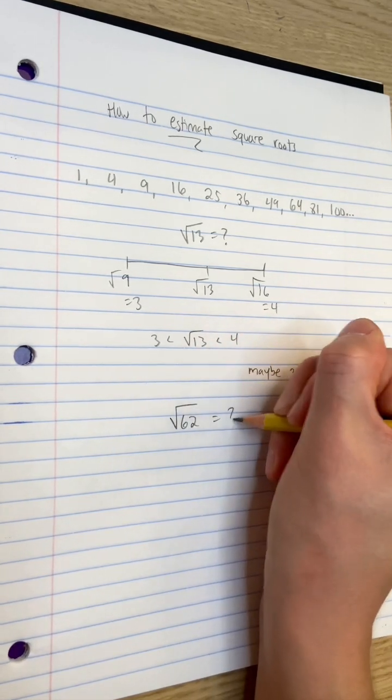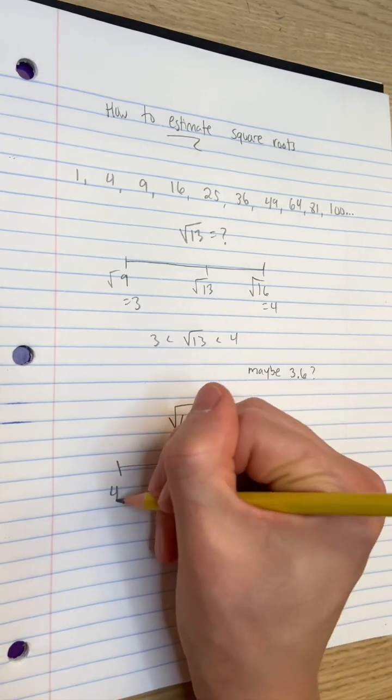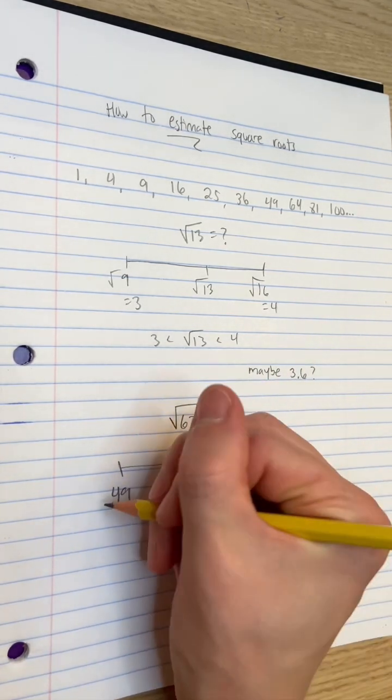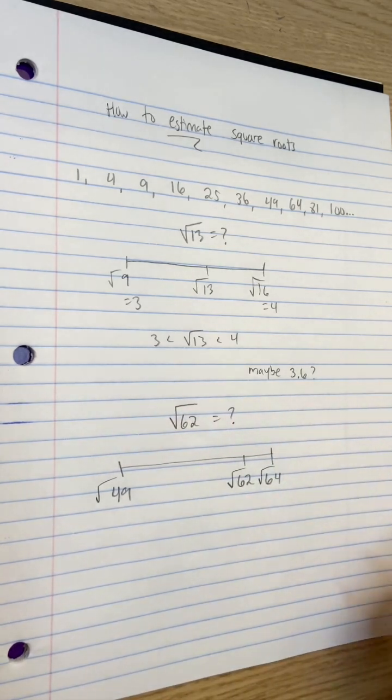Let's do another example, the square root of 62. 62 is in between the perfect squares 49 and 64, which we know the square roots of, 7 and 8 respectively.